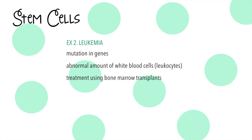People with leukemia have to go through chemotherapy, which aims to destroy the white blood cells, but in the process it also destroys healthy cells. That's why patients who undergo chemotherapy lose their hair — hair follicles are one of the fastest-growing cells in the body, and they get destroyed as well.